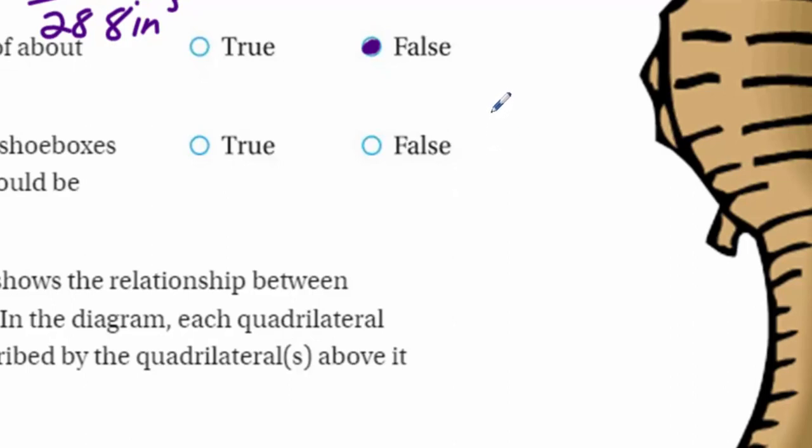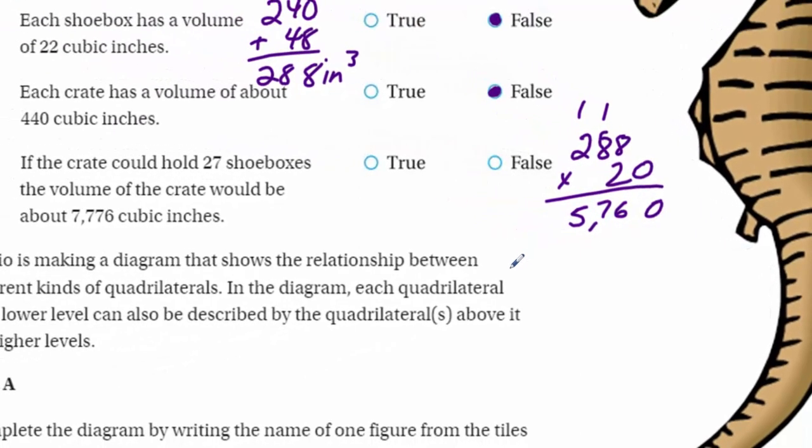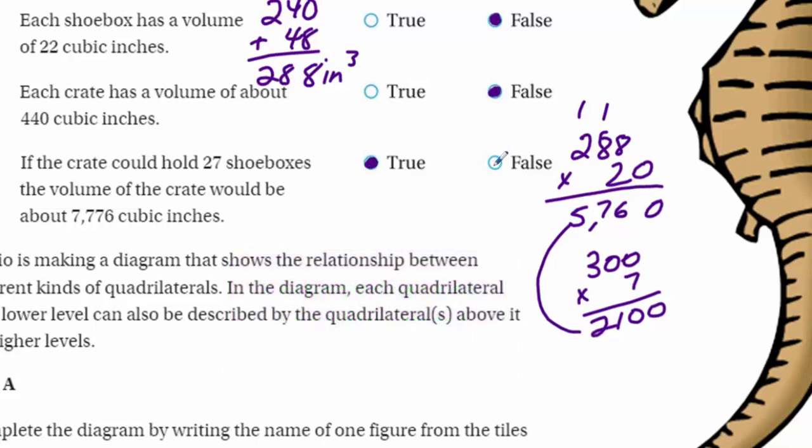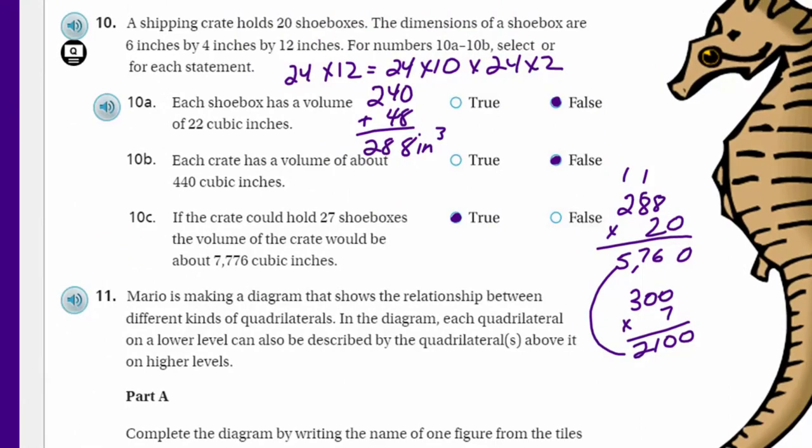Now if the crate could hold 27 shoe boxes, the volume of the crate would be about 7,776 cubic inches. This is going to be a really large number, so we're going to have to figure this one out. We'll take our 20 now - we'll take our 288, since that was the volume for one shoe box. We need 20 of those in one crate, which is going to give me 5,760. And now it's saying 7 more. Could we estimate? Could we say 288 is really about 300? Just multiply that by 7 - that would be 2,100. And if we add that 2,000 out of 5,000, is that about 7,000? Yes, that looks extremely close. So I'm going to go ahead and say true for number 10C.